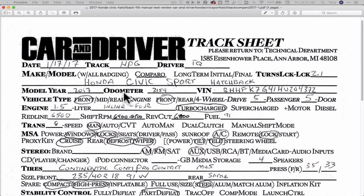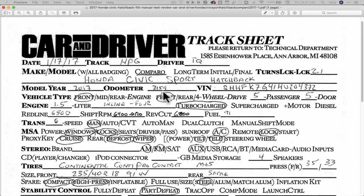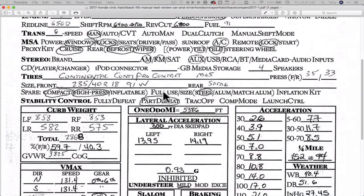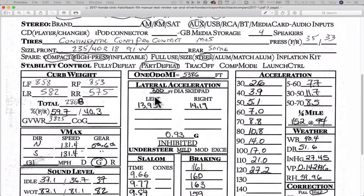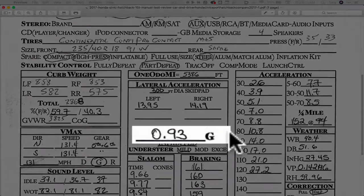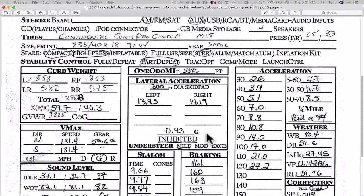This is actually what they used when they were out testing it. If I scroll down, here it is right there in the middle — lateral acceleration, 300-foot diameter skid pad. So it's just a circle drawn on tarmac that they went around faster and faster, and there it is: 0.93 Gs. That's the maximum Gs that this car can pull going around a circle, under ideal conditions.